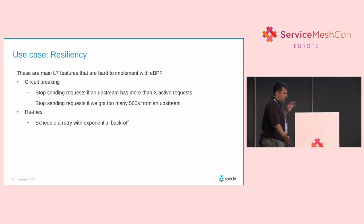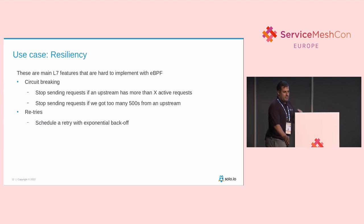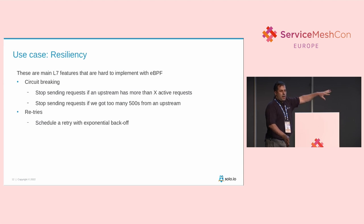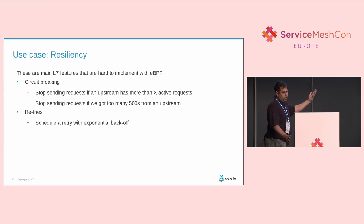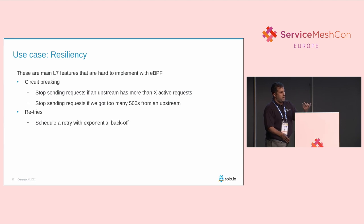Let's talk about resiliency. With L7 resiliency, think about how complicated a retry is. When a proxy does it, it has to schedule a request, get a response, see that the response is a 500, schedule an exponential backoff, retry the request asynchronously — all while holding back the original request and continuing to serve other request streams from the same connection upstream. All this complex state management is very hard to do with eBPF today. Things like passive health checks (taking a host out of load balancing on a 500) and circuit breakers are also hard to do with eBPF today. It's not impossible, just a lot harder than doing it in user mode.